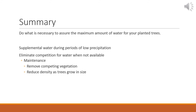In summary, water availability — more than any other variable — will overcome most of the challenges placed on North Dakota's planted trees. Doing what is necessary to assure the maximum amount of water for your planted trees is the goal. Supplemental watering during periods of low precipitation should be done when available, and eliminating competition for water when not. Maintenance by removing competing vegetation such as grass and herbaceous species should be done periodically, and reductions in density of the trees in your planting should be done as growing space is filled. Planting the right tree in the right place and assuring it has limited competition will be the most effective way to maintain resource availability and ultimately tree health. This concludes the presentation — thank you very much for your time.